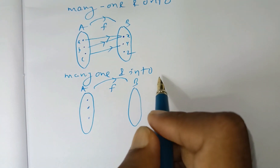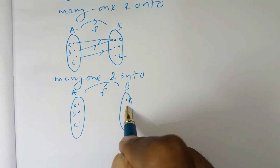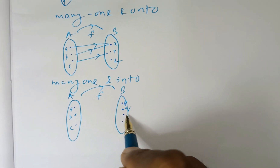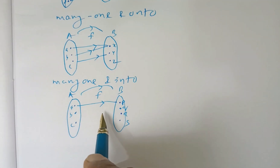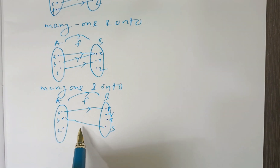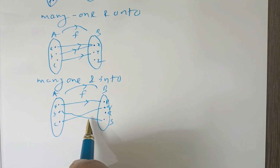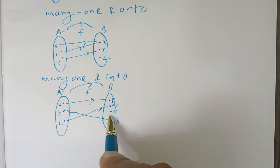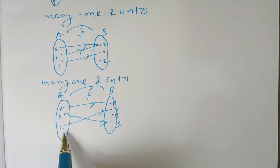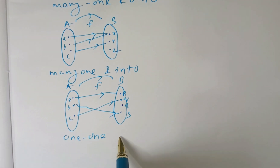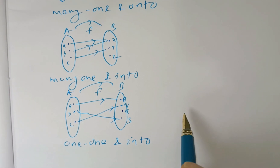Now consider the fourth example. Set A and set B are there with a mapping from A to B. Suppose the points in set A are A, B, C and there are four points in set B: P, Q, R, S. Suppose P is the image of A, S is the image of B, and Q is the image of C. Then point R is left behind. Every image is connected to a distinct pre-image, so this is a one-one function, but it is not onto — it is into because point R is left behind.